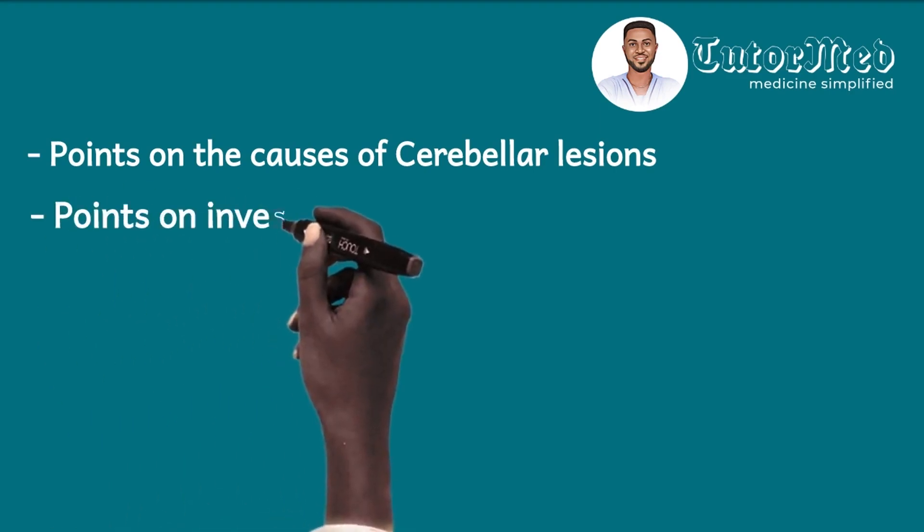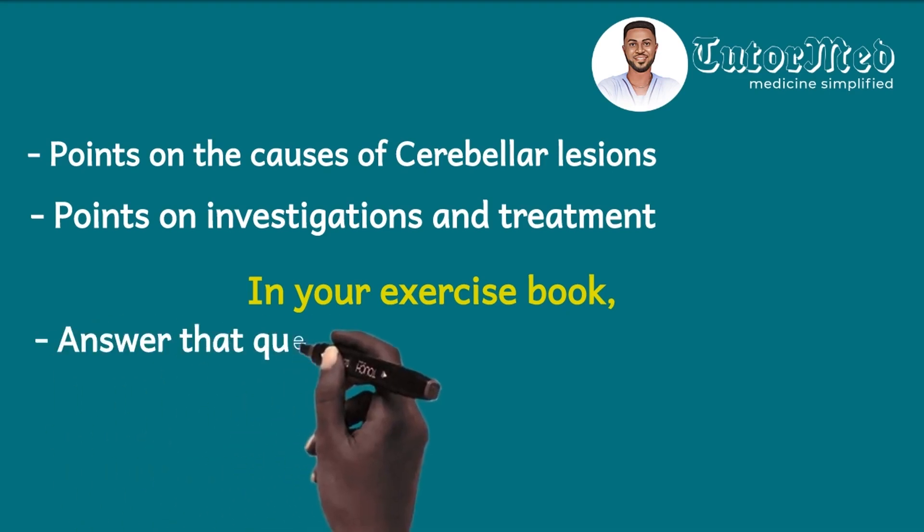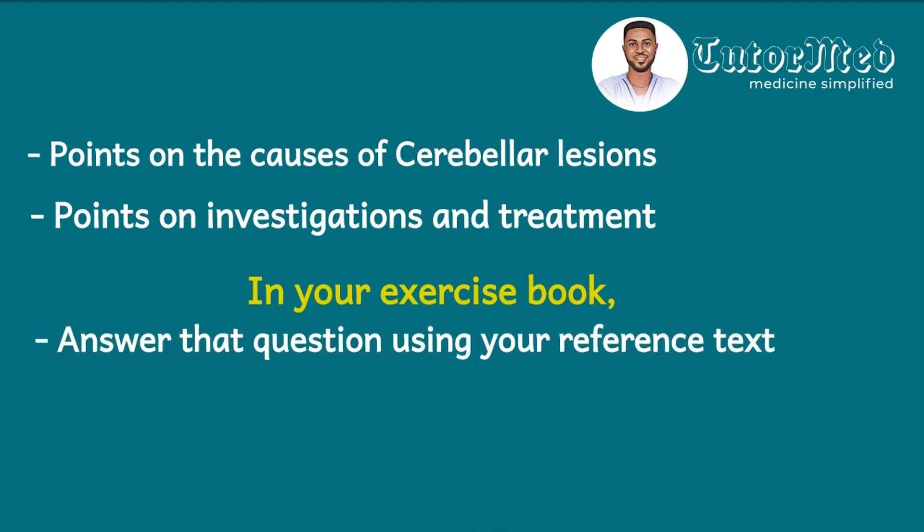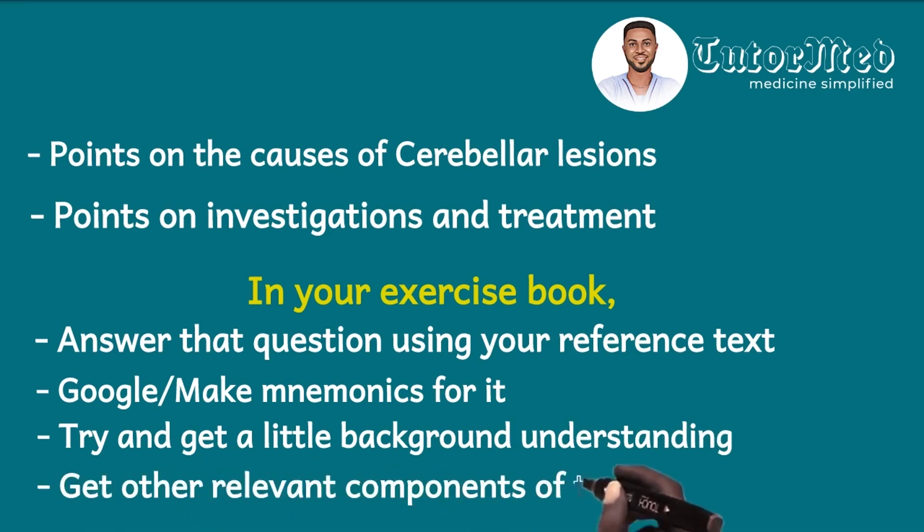And so after you've gotten the understanding like we have demonstrated, you have to make other points like points on the causes of cerebellar lesions, although the question did not ask you about that. Because for all you know, next time cerebellar lesions will come, they will be asking of causes instead of the clinical features. And so make points on the causes of cerebellar lesions, and then you can also make points on how to investigate and treat cerebellar lesions. So really, in your exercise book, this is what you should be doing: when you find a question, just find answers to that question by using your reference text and then Google and make mnemonics for your answer so that they can help you memorize and then remember them. Then afterwards, try and get a little background understanding of the topic and then get other relevant components of the topic. Put this information in your text, sorry, in your exercise book, and then go over them. Hello, this might seem like a lot of work, but I tell you it is worth it, it is really worth it.